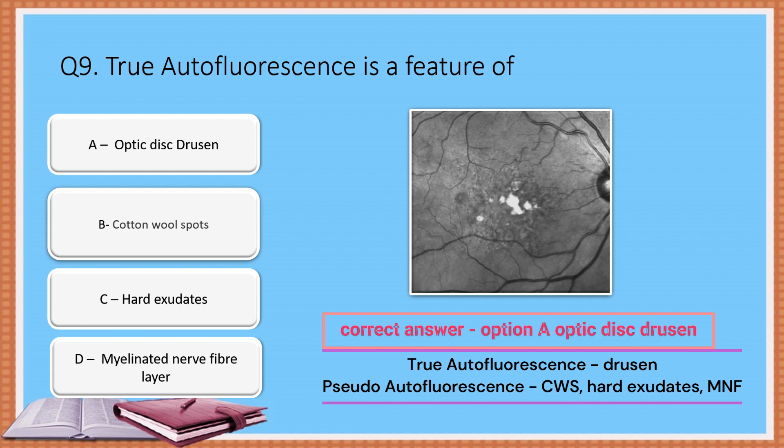Autofluorescence is defined as the emission of fluorescent light from ocular structures in the absence of sodium fluorescein. Pseudo-autofluorescence results from reflection of light from light-colored or white fundal structures such as myelinated nerve fibers, sclera, and hard exudates.